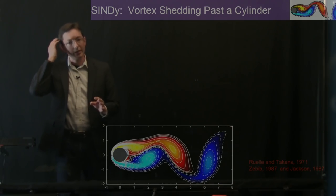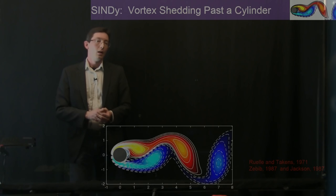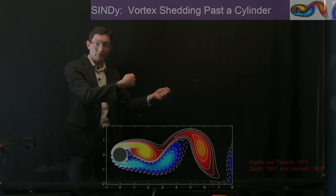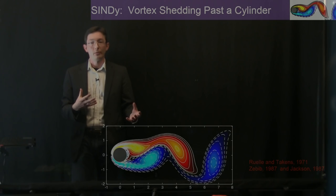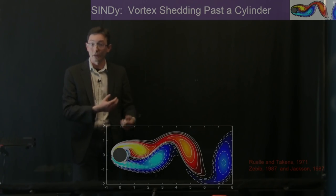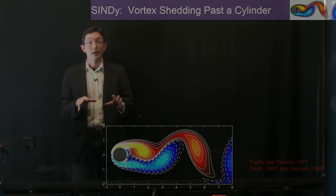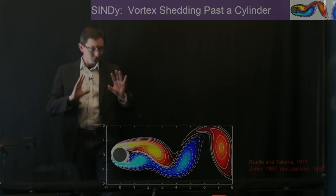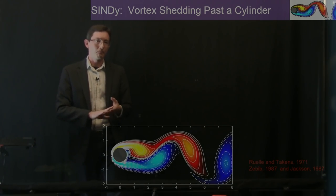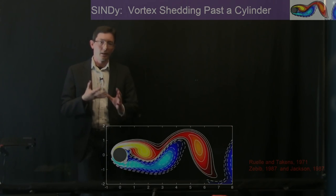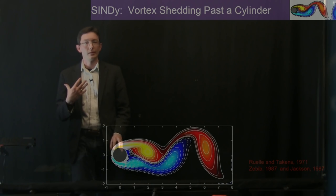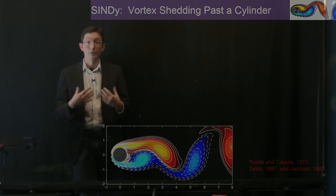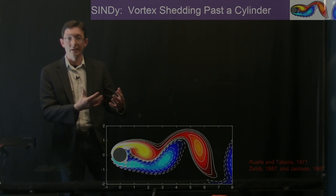Now I want to move on to a more complicated and interesting example: fluid flow past a stationary cylinder inducing vortex shedding. This is a benchmark problem in fluid dynamics. When we realized that the SINDy algorithm can predict a good nonlinear low-order model for this system, we got really excited because this is actually close to real research problems in fluid dynamics. Finding a low-order model for vortex shedding past a cylinder was not a simple task — it took decades of very bright people working very hard to develop new theories.